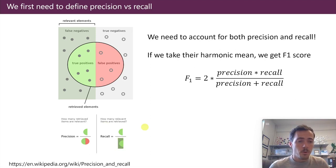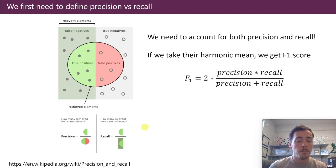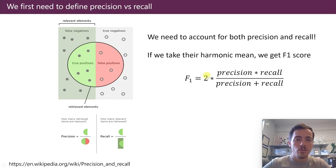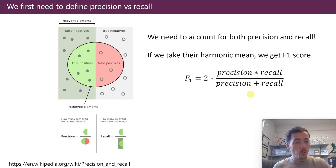Both precision and recall are important — it depends on what you're trying to do. If you're trying to find all of something, recall matters. We often want to maximize both, so we need a metric that combines them. One way is to calculate their harmonic mean, which we call the F1 score: two times precision times recall, divided by the sum of precision plus recall. That gives you the F1 score, and now we're able to talk about how we do at extrapolating.